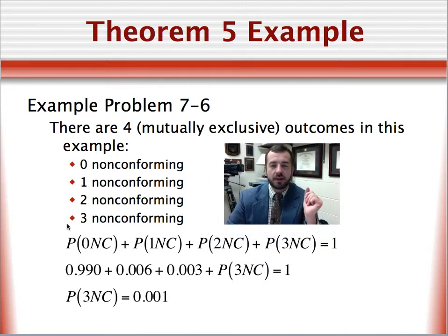In this case, we know the probability of zero non-conforming units. We know the probability of one non-conforming unit and two non-conforming units. But we don't know the probability of three non-conforming units. So we punch in our values 0.990, 0.006, 0.003. And we know that all four of these terms add up to one. So we punch in the numbers. We get 0.999 plus the probability of three non-conforming units equals one. We solve for the probability of three non-conforming units. And we get 0.001. So this is a 1% or 0.1% probability.